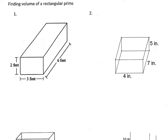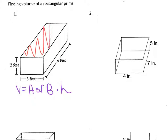Let's take a look at some examples. I'm going to start by writing the formula: volume equals area of base times height. The first thing I'm going to do is shade the base. In number one, you actually can't see the bottom rectangle, so instead of shading the bottom, think about what side is the same as the bottom. The top is the same as the bottom, so I'm going to shade the top and find the area of the top.